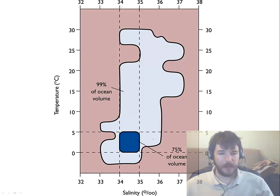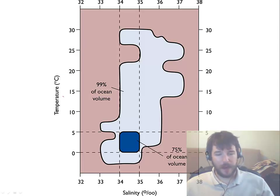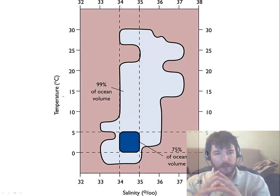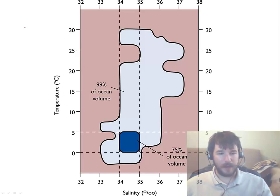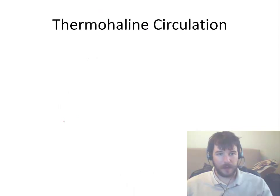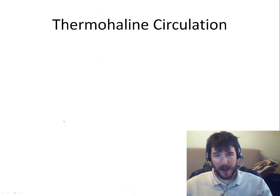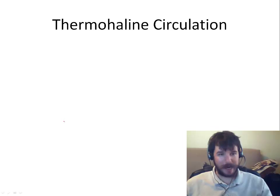Here's a little graph showing you how the ocean's volume changes and how water changes based on temperature and salinity. This is that basic area that we're looking at for the thermohaline circulation.